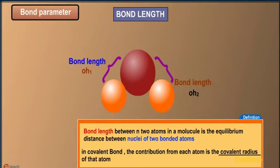Definition: Bond length between two atoms in a molecule is the equilibrium distance between nuclei of two bonded atoms. In covalent bond the contribution from each atom is the covalent radius of that atom.